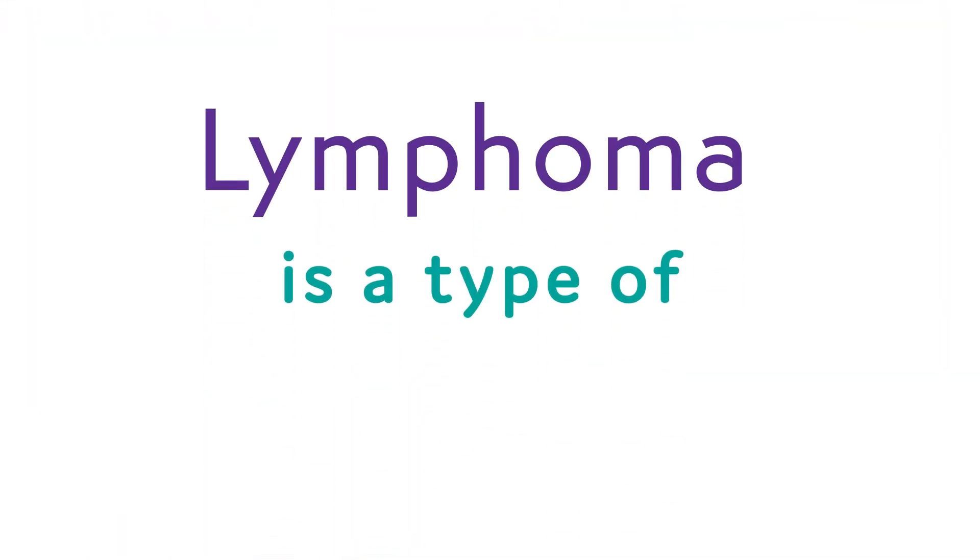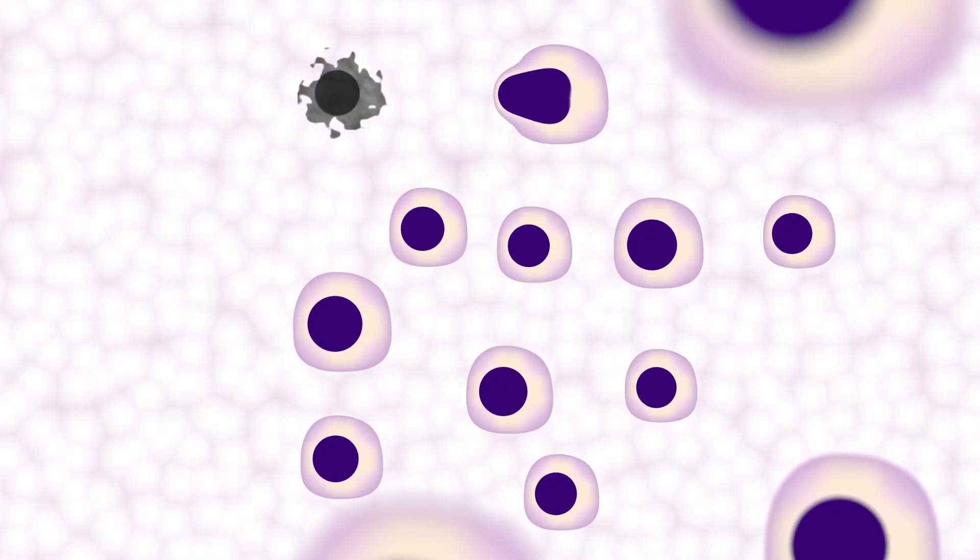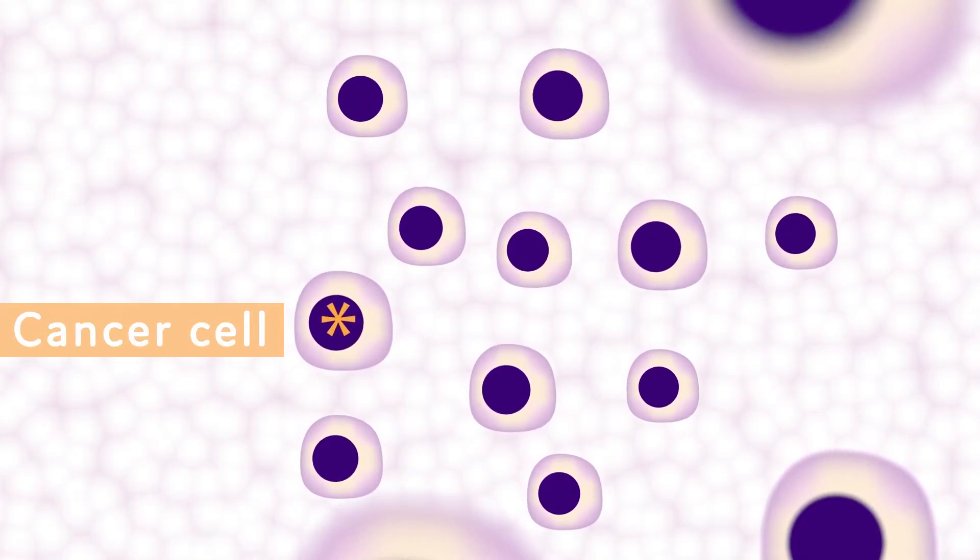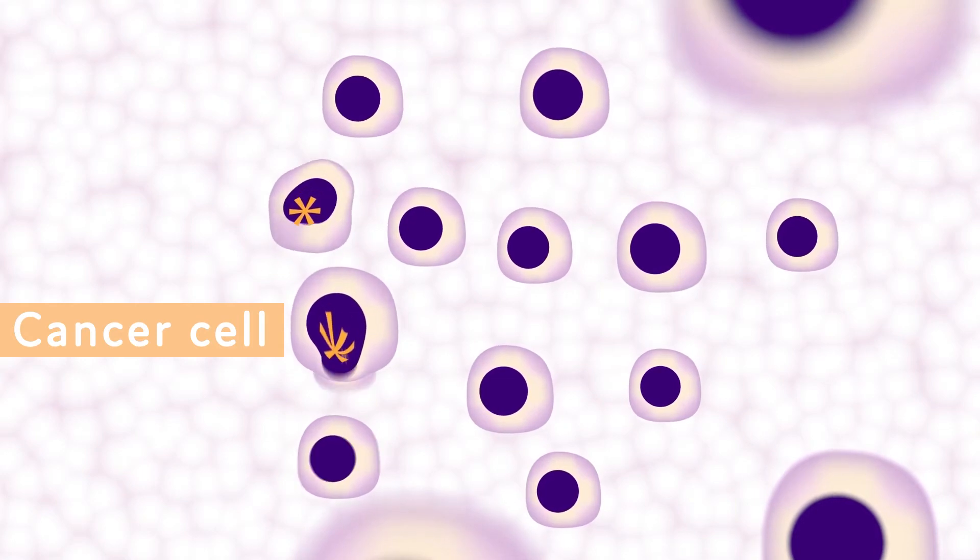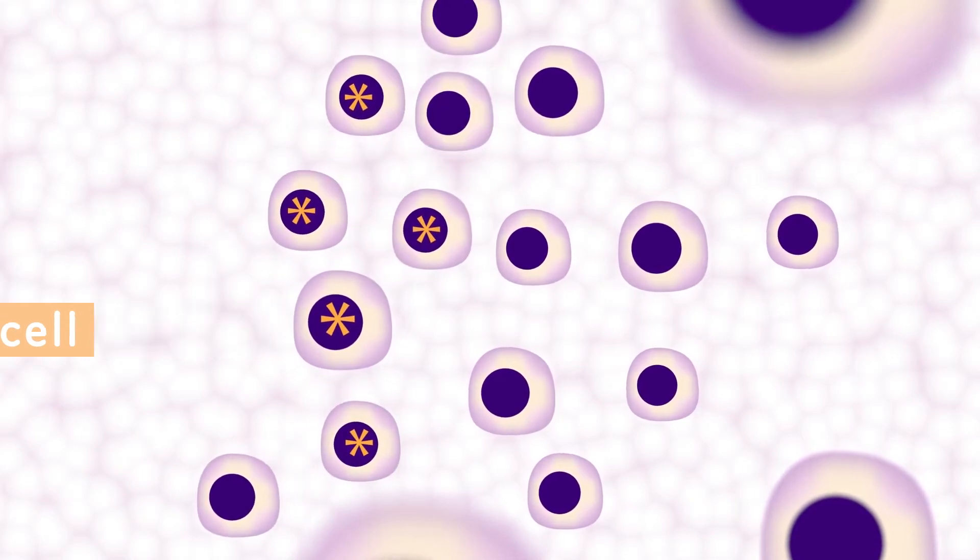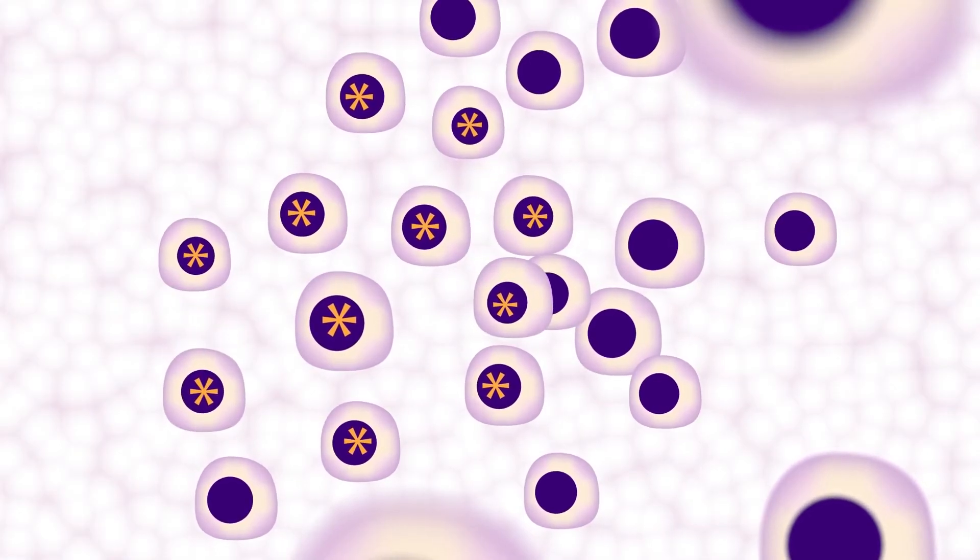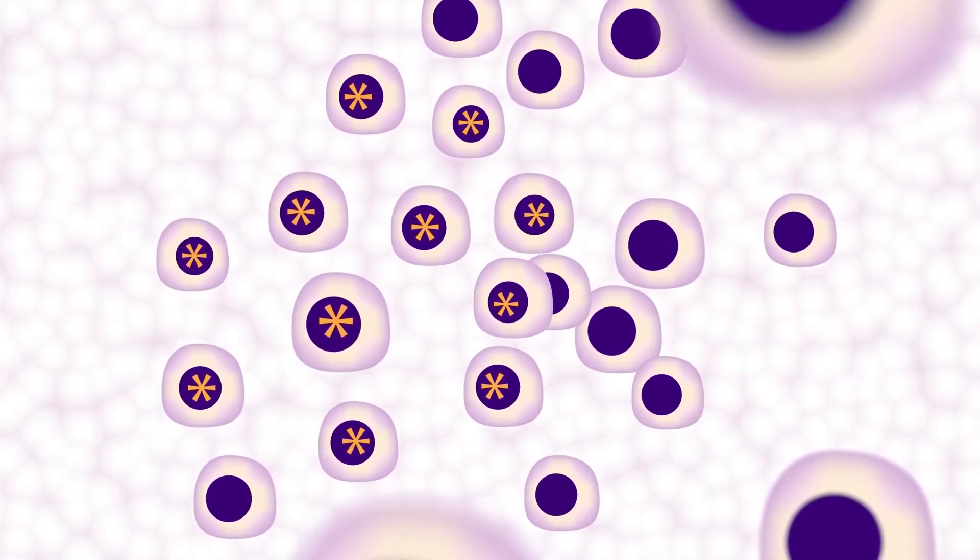Lymphoma is a type of cancer. It develops when lymphocytes, which are a type of white blood cell, become cancerous and grow out of control. They can then build up in the lymph nodes or other parts of the body. This can happen when lymphocytes divide more often than normal. It can also happen when they don't die when they should.